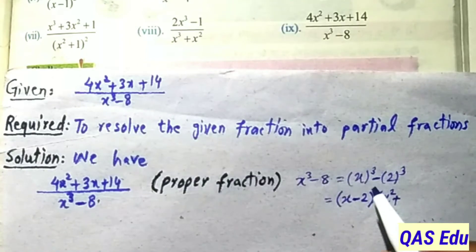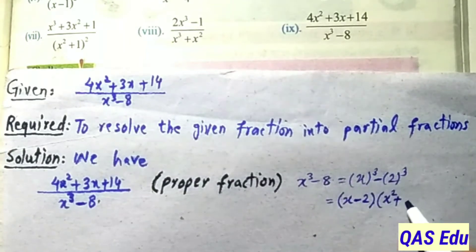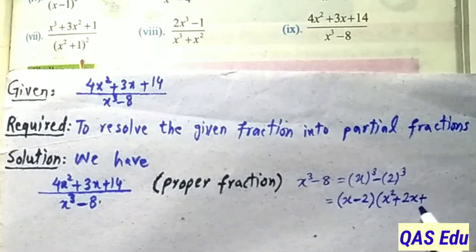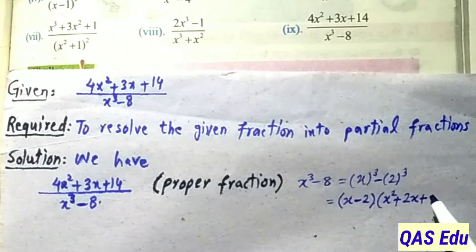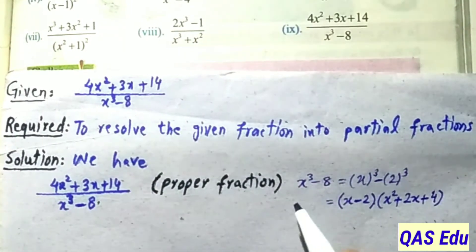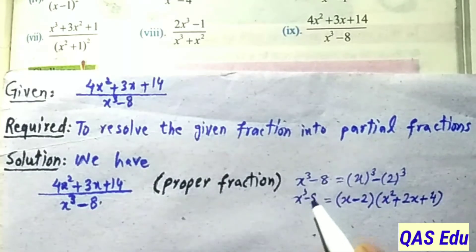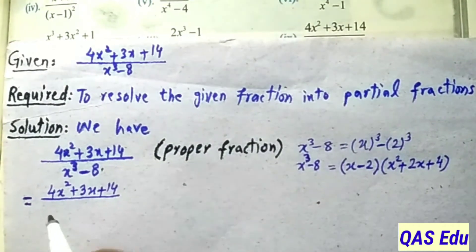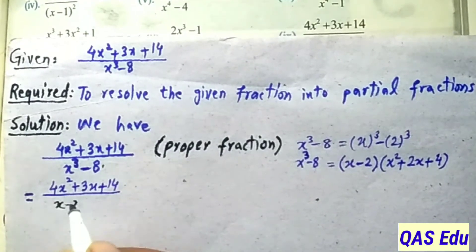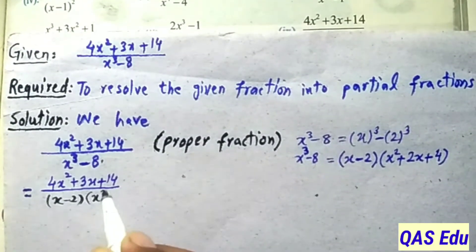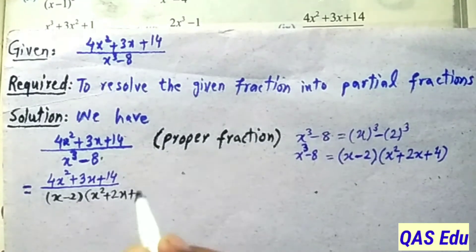Multiplying out: a = x and b = 2. So a·b = 2x, and b² = 4. Therefore x³ - 8 factorizes into (x - 2)(x² + 2x + 4). The denominator is now expressed as x minus 2 times x squared plus 2x plus 4.